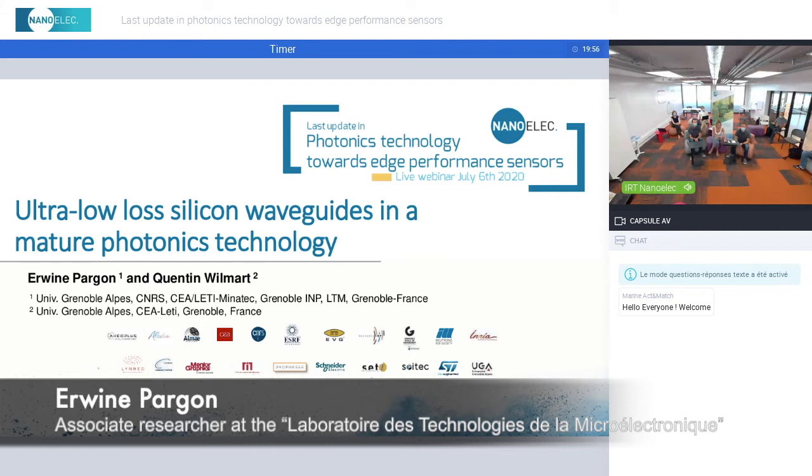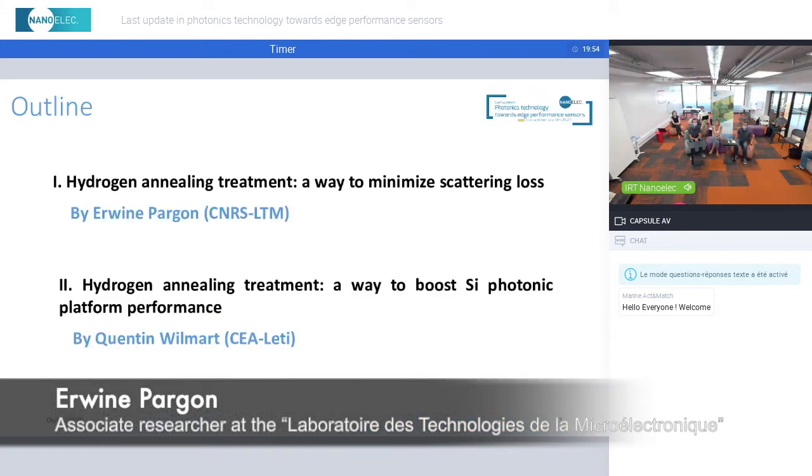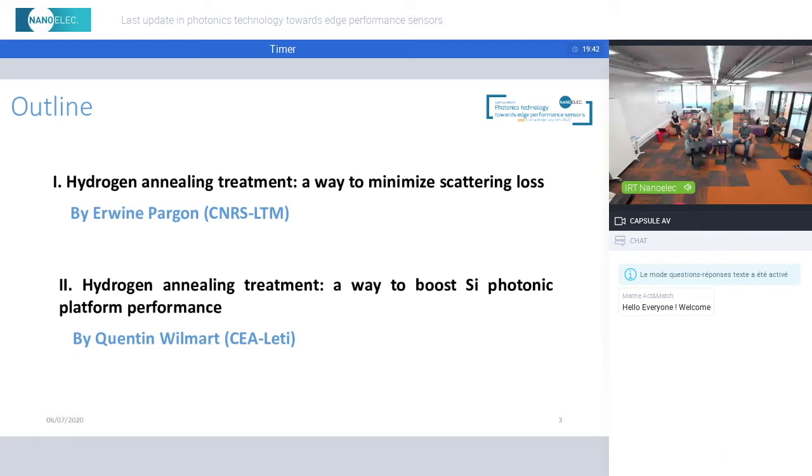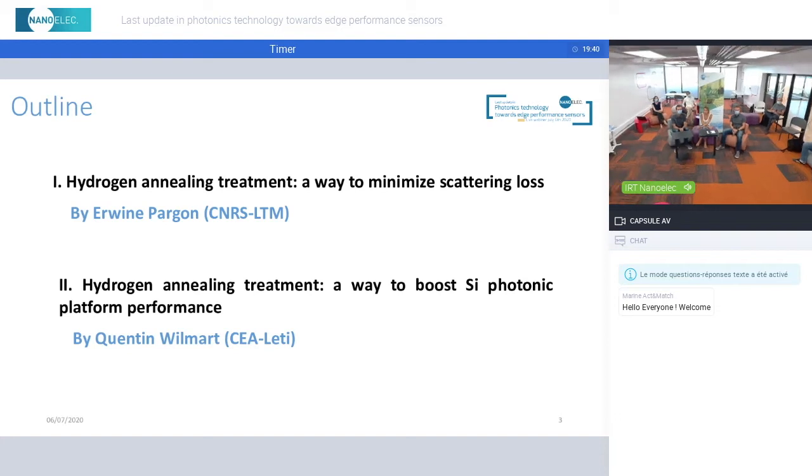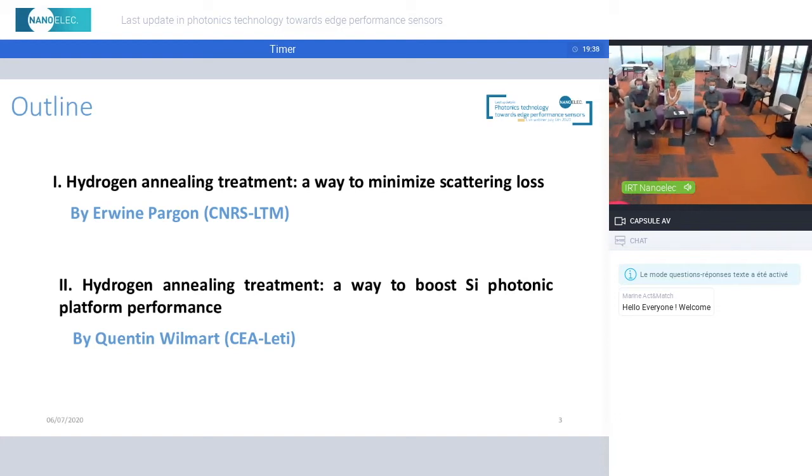This presentation will be divided into two parts. In the first part, I will discuss how hydrogen annealing treatment can help to fabricate ultra-low loss silicon waveguides. In the second part, Quentin Wilmart from CEA-Leti will show you how this treatment can be introduced in the fabrication process of the silicon photonic platform and boost its performance.